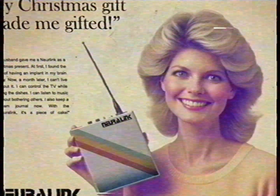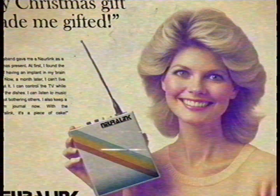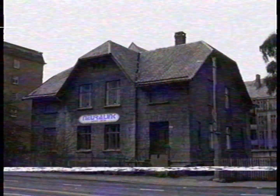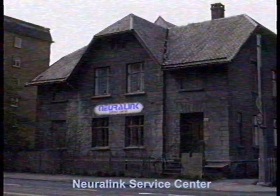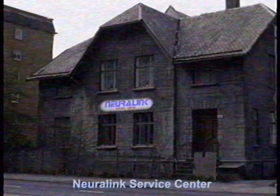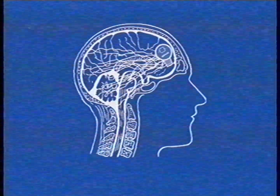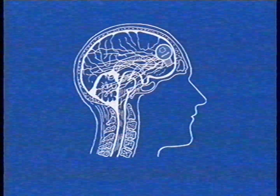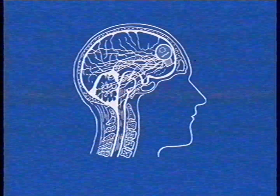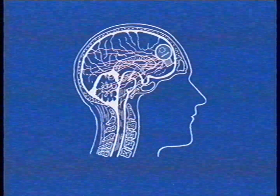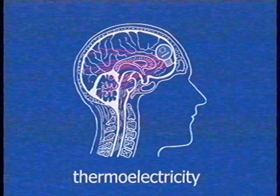Finally after a long test period Neuralink is now available. But how does it work? First you'll have to get your Neuralink brain implant from the designated Neuralink service center. Last week I got my Neuralink implant installed. Neuralink will put a bunch of microscopically small wires in your brain that are connected to a small circuit port with a broadcasting unit. No batteries are required for this because it converts your body heat into electricity.